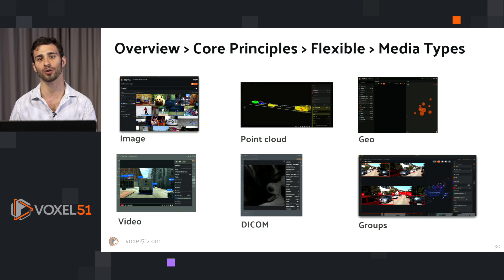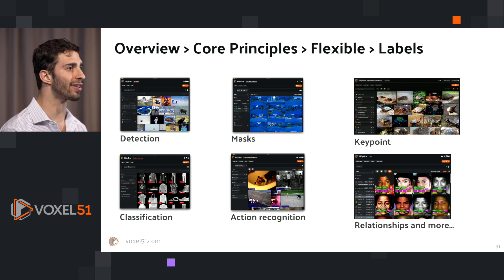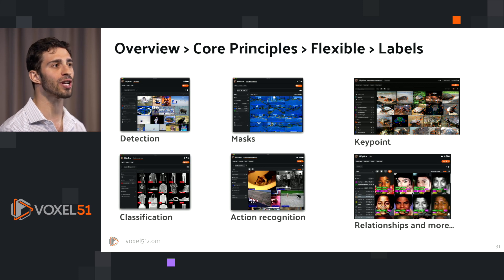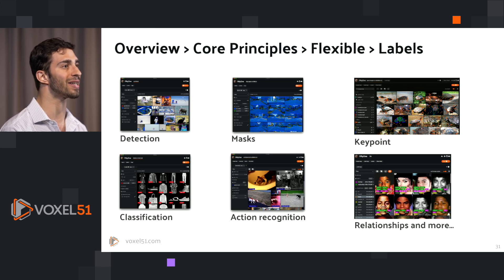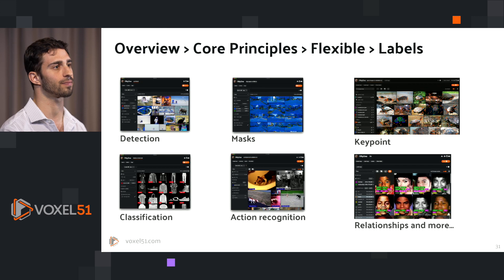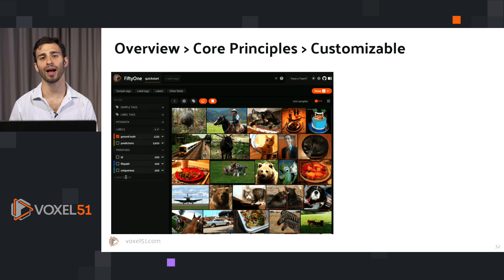Finally, this flexibility extends to labels. There are many different tasks in computer vision and machine learning — from classic image-based tasks like image classification and object detection, to multimodal tasks like text-to-image generation and visual question answering. FiftyOne has label types that help you perform these tasks and work with data for all these workflows, including detections, instance and semantic segmentation masks, keypoints, action recognition, relationships, and much more. And if the built-in defaults aren't quite what you need, FiftyOne is also highly customizable.